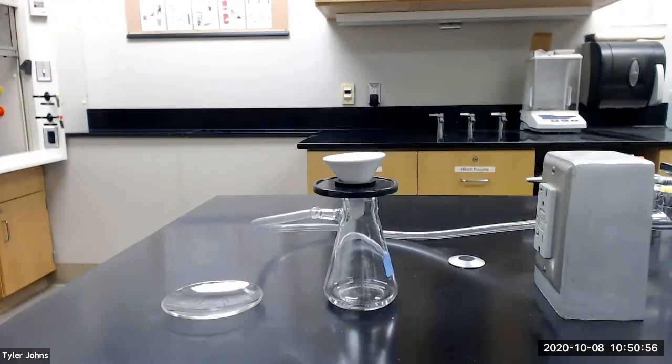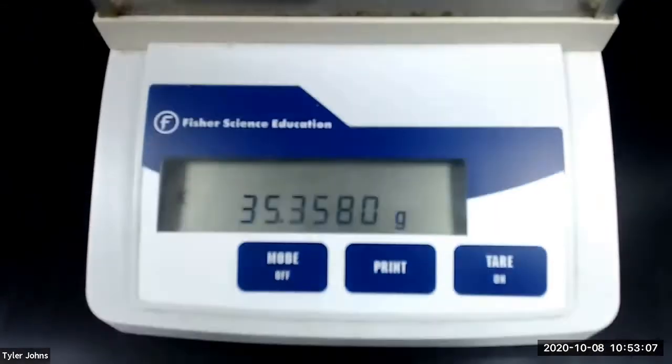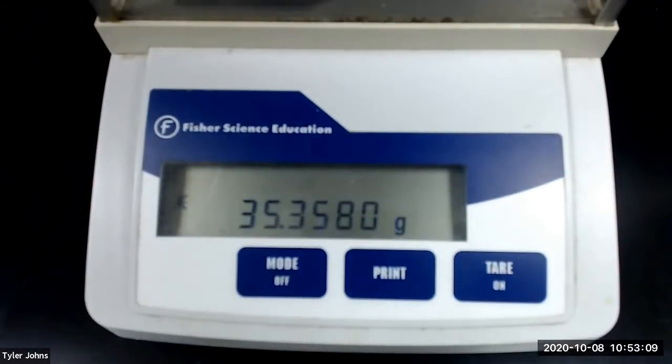While our crude acetaminophen crystals continue to air dry, we need to pre-weigh a watch glass. The mass of our pre-weighed watch glass is 35.3580 grams.